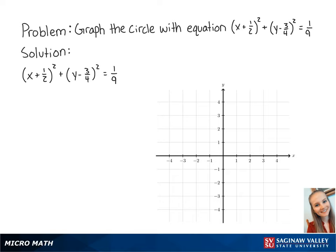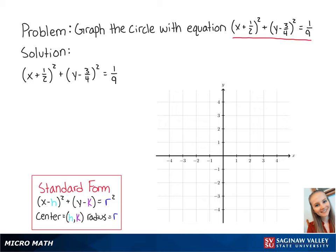For this problem, we want to graph the circle with equation (x + 1/2)² + (y - 3/4)² = 1/9. We're going to use standard form to find the center and the radius.